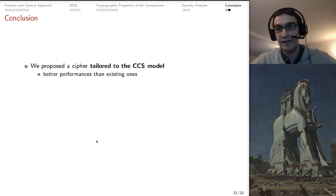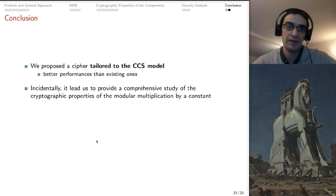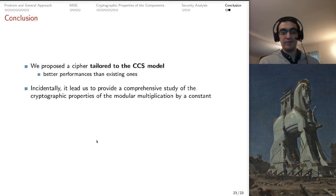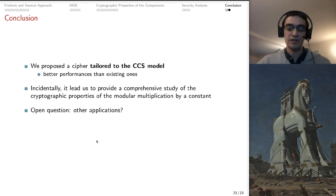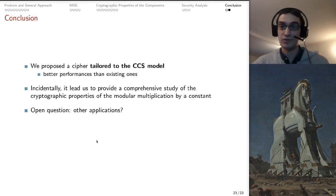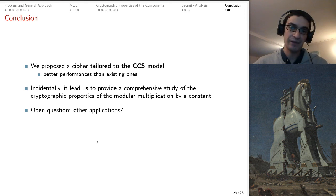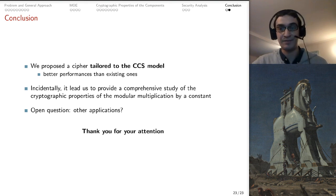In conclusion, we have proposed a cipher which is tailor-made to the CCS model to prevent hardware trojans from being exploitable and it has better performances than existing ones at the time of publication. Along the way, we have made a comprehensive study of the cryptographic properties of modular multiplication by a constant, in particular 3, and we even found some fractals along the way, which is always fun. But obviously, this cipher has a very simple structure which, while it was intended for this specific use case with hardware trojans, could have other applications which we would be very curious to hear about. And with that, I will conclude this talk. Thank you for your attention.